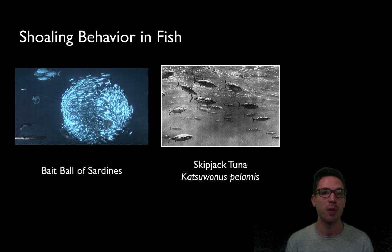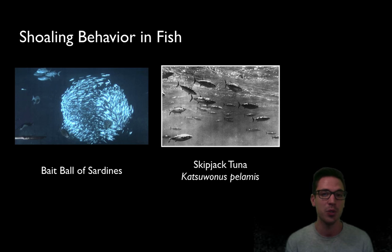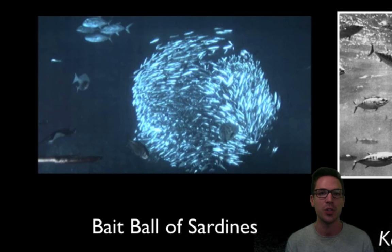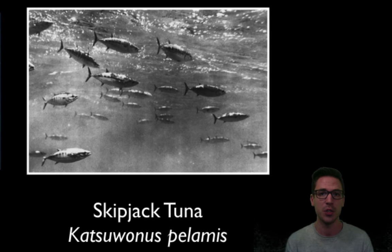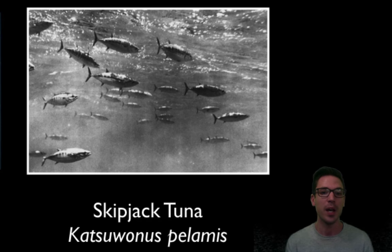Two great examples of fish to reference when discussing shoaling are sardines and tuna. Something interesting about sardines, in addition to shoaling, is that they form bait balls — when all the fish in a last-ditch effort to avoid a predator get tightly packed together, each trying to reach the center of the group, forming a sphere called a bait ball. Tuna are interesting because their shoals can become massive — up to 50,000 individuals. Either way, tuna, sardines, and many others are examples of fish that use shoaling behavior.